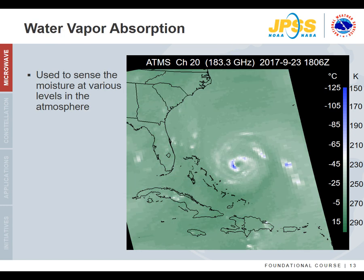This 183 GHz band from the ATMS for the same swath is in the water vapor absorption region and is generally insensitive to surface emissivity. If we took off the map, we could not readily distinguish between land and water — in a general sense, this is similar to the water vapor channels in the infrared. Because of sensitivities to precipitating and non-precipitating clouds and moisture regions, we can discern the eye and bands from Hurricane Maria.